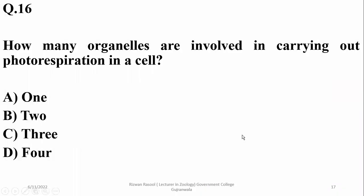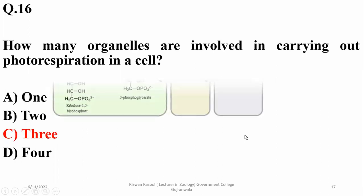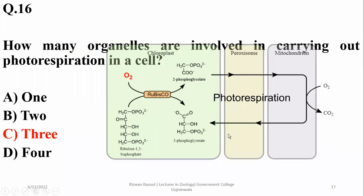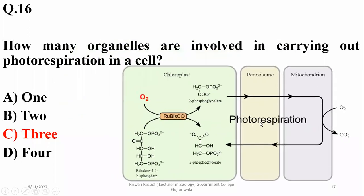Question fifteen: How many organelles are involved in carrying out photorespiration in a cell? There are three organelles. The first step occurs in chloroplasts, the second in peroxisomes, and the third and last step of photorespiration takes place within mitochondria.